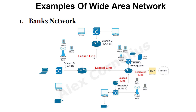In each of these branches, a bank must have different host devices connected to the router through a switch. As you can see in this case, we have a laptop, terminal, printer, and a wireless access point. You can distribute this service to as many host devices as you like, depending on how much bandwidth you have obtained from your ISP. So that is the basic overview of a bank's Wide Area Network.